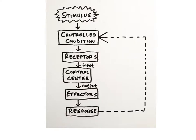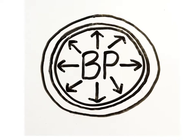Let's take a look at an example of a common negative feedback system: the regulation of blood pressure. We're going to use the same feedback system components that we reviewed in Podcast 1-4. Blood pressure is the amount of force generated by blood as it pushes against the blood vessel walls, as shown in this cross-section diagram.